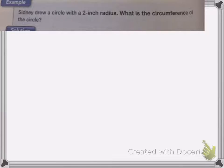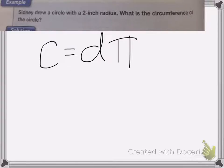So if I have this equation, say you drew a circle with a 2-inch radius, what is the circumference of the circle? So remember, circumference equals diameter times pi. This is the easiest one to remember, so I suggest using this equation.